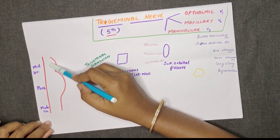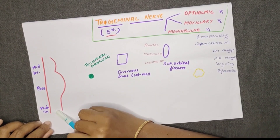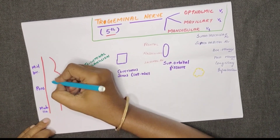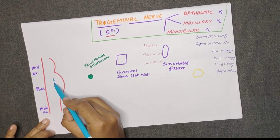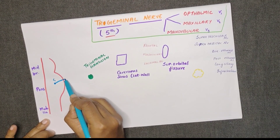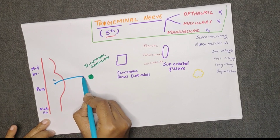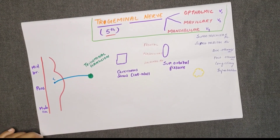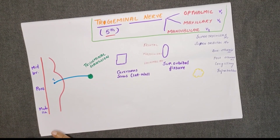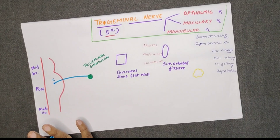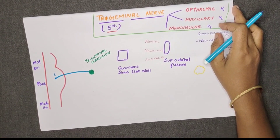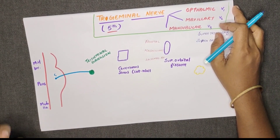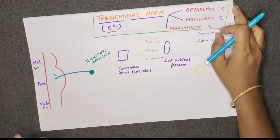We are going to look at the midbrain, the pons, and the medulla. The 5th cranial nerve has two roots: one is sensory and one is motor. This makes the trigeminal nerve a mixed nerve — meaning it has both motor and sensory components.